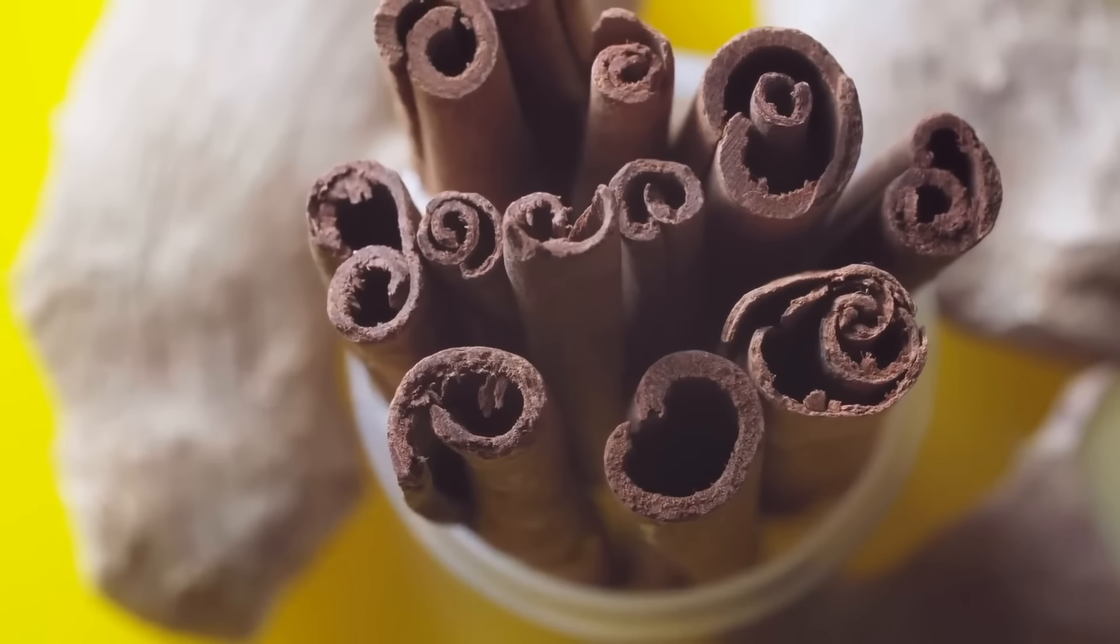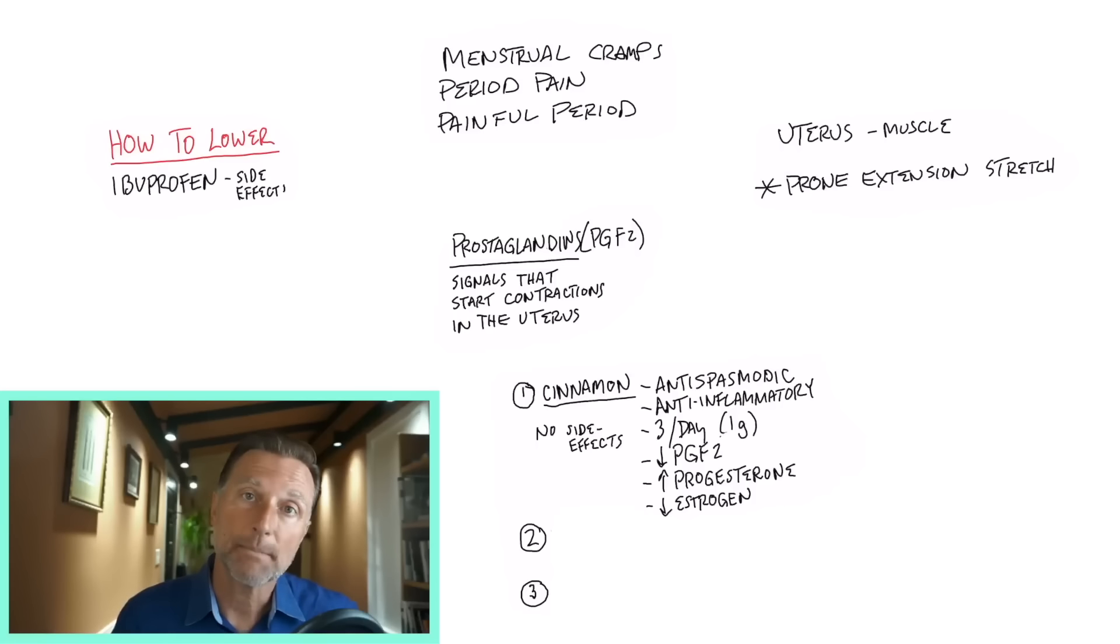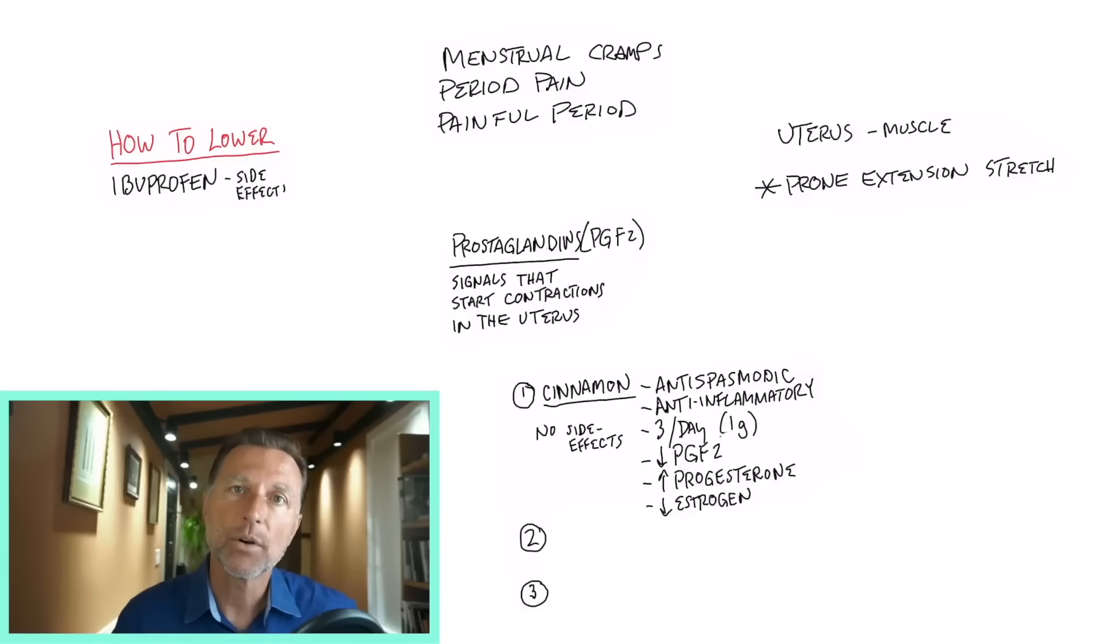Cinnamon has a lot of different properties for regulating blood sugars. But in this situation, it gives an antispasmodic effect. It gets rid of spasms and can help you reduce inflammation. Why? Because it lowers prostaglandins, the specific ones that are affecting the uterus.